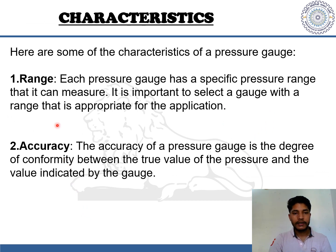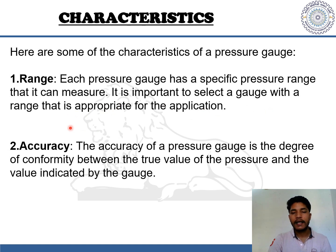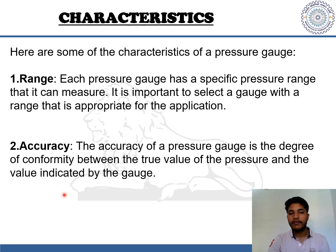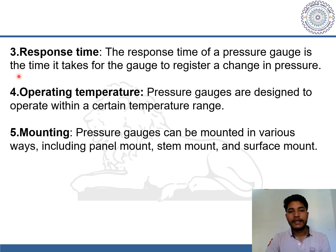Now let's look at the characteristics of a pressure gauge. First, range: each pressure gauge has a specific pressure range that it can measure, and it is important to select a gauge with a range appropriate for the application. Second, accuracy: the accuracy of a pressure gauge is the degree of conformity between the true value of the pressure and the value indicated by the gauge.